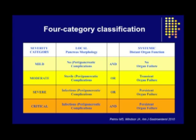This new classification is consistent with the original Atlanta classification and stresses the importance of infectious pancreatitis, as opposed to any local complication in the Atlanta classification. It also stresses the clinical importance of the interaction between local and systemic complications, with the highest mortality being attributed to the presence of both persistent organ failure and infectious pancreatic complications. To this end, we commend this new four-category classification of acute pancreatitis, because it reflects important and clinically relevant factors in individual patients.